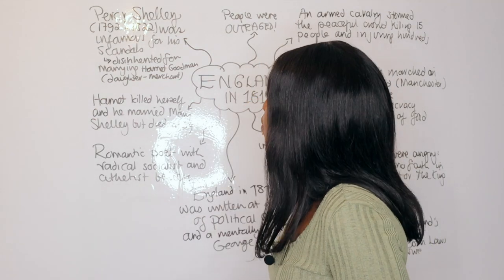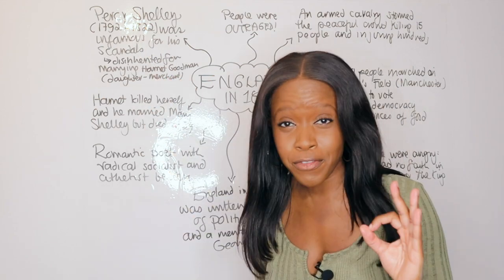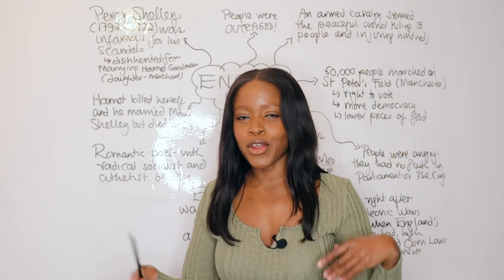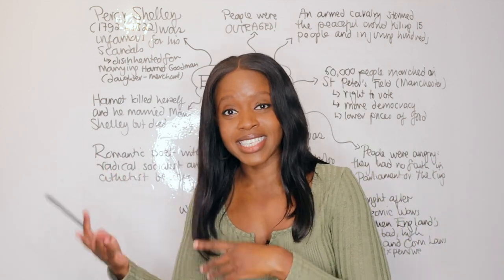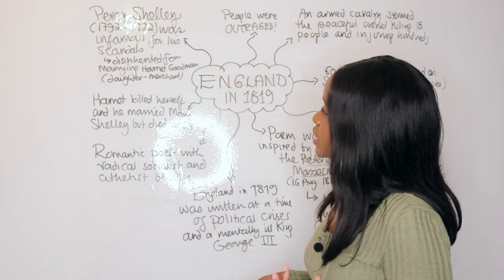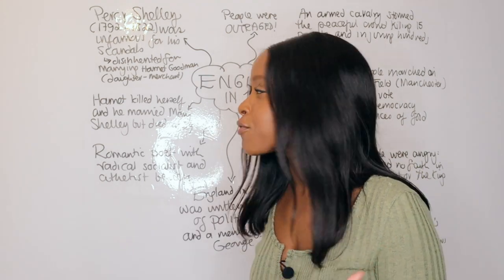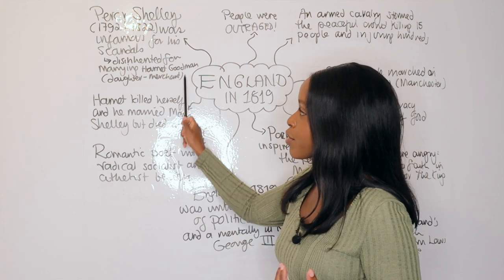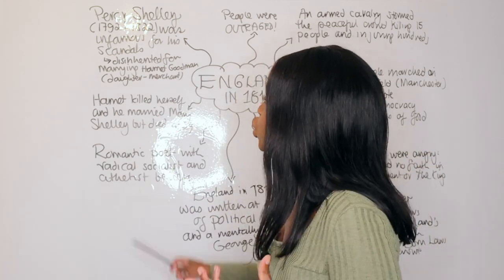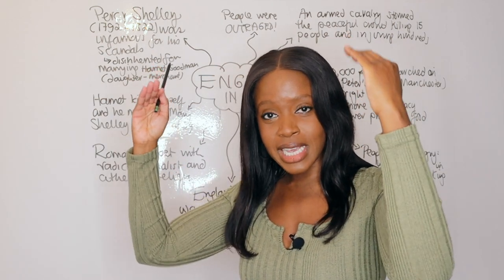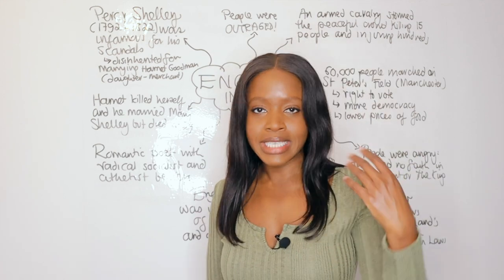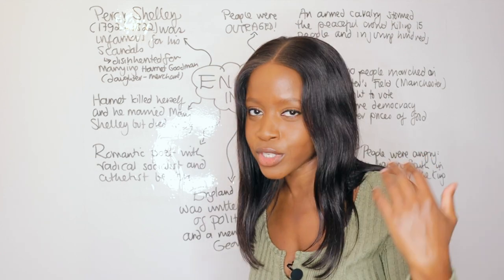In terms of Percy Shelley himself, he lived from 1792 to 1822 and was very infamous — very well known during this time for his scandals. Percy Shelley was basically a kind of mini-celebrity at the time. He was born to an aristocratic family but was quite a rebel. One of the scandals that led him to be disinherited by his father was his decision to marry a 16-year-old girl called Harriet Goodman. This was seen as scandalous because she wasn't of his social status — she was the daughter of a merchant, not from an aristocratic background. Despite his father's and family's objections, the rebel that he was went ahead with the marriage.